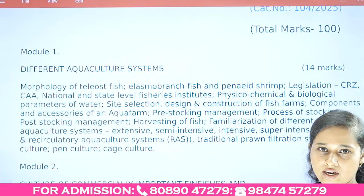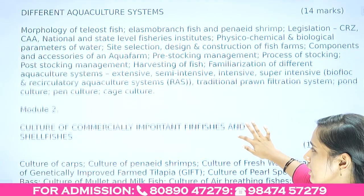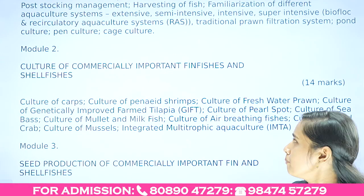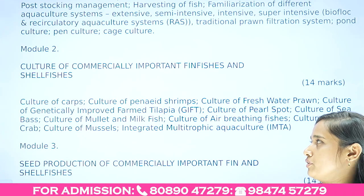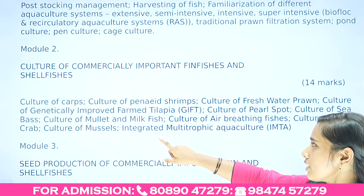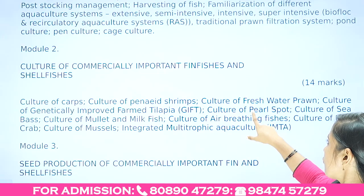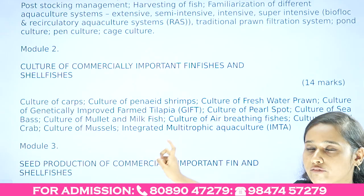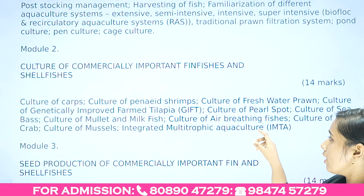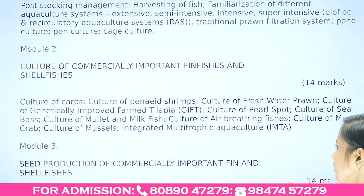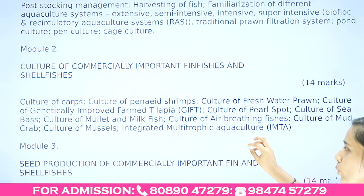Module 2 covers aquaculture-related aspects, specifically commercially important finfish and shellfish. This includes crab culture, shrimp culture, freshwater prawns, tilapia — especially genetically improved farmed tilapia (GIFT) — pearl spot, sea bass, pinnumollet, milkfishes, various air-breathing fishes, mud crab, mussels, and integrated approaches to aquaculture.